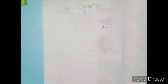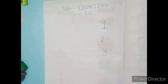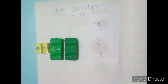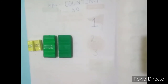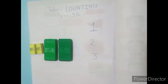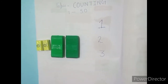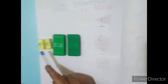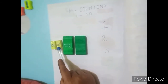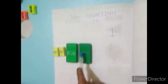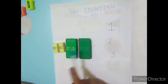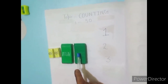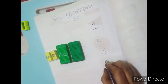Now I am showing your next object. Look here — what is this? This is an eraser. How many erasers are here? Four. Look here and count it: one, two, three, four. Repeat again: one, two, three, four. Now you have to write four.